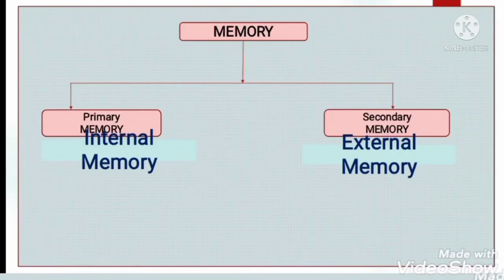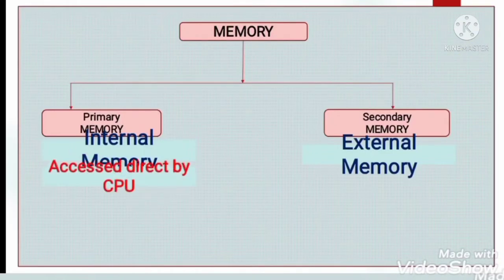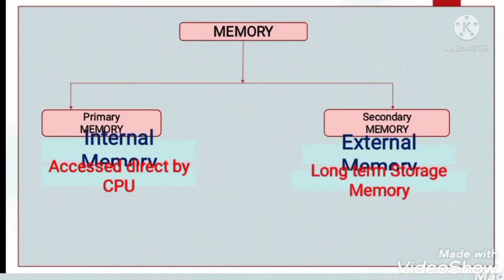First, I want to talk about memory. We have two kinds of memory — primary memory and secondary memory. Usually, primary memory is called internal memory, and it is accessed directly by the CPU. In the case of secondary memory, it is called external memory and it is long-term storage memory. If you want to store lots of data — bulk data — you can store it in secondary memory.